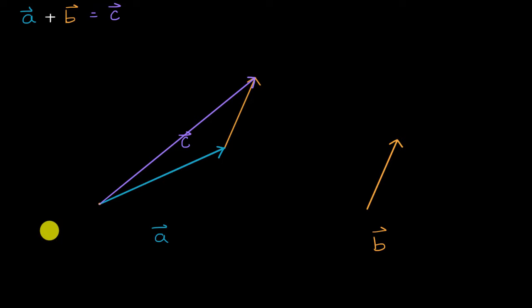Now we could have also thought about it the other way around. We could have said, let's start with vector B and then add vector A to that. So I'll start with the tail of vector B, and then at the head of vector B, I'm gonna put the tail of vector A.